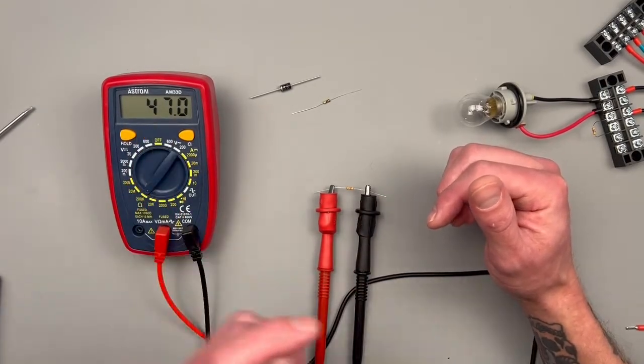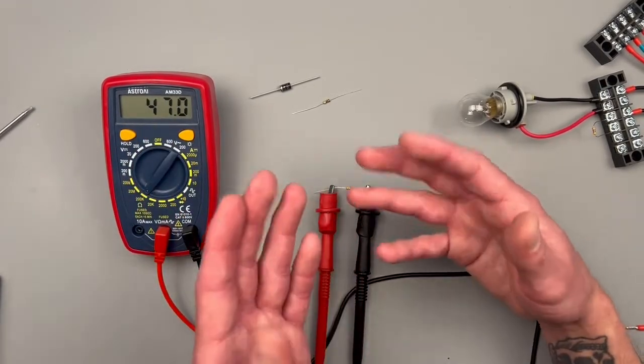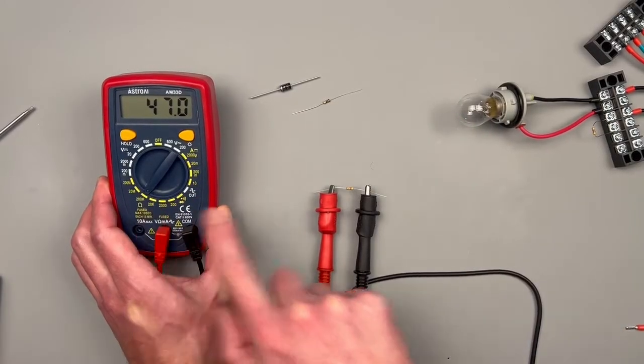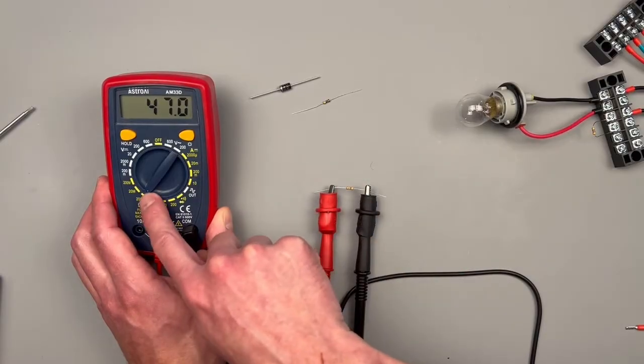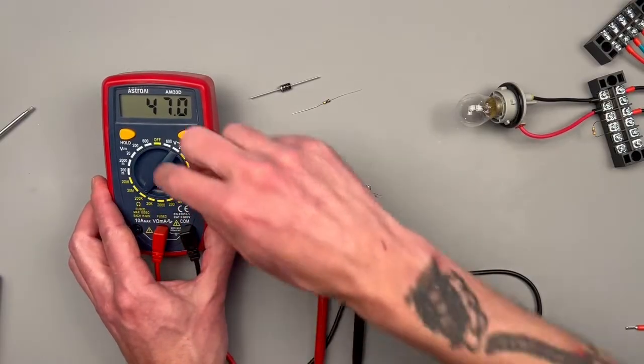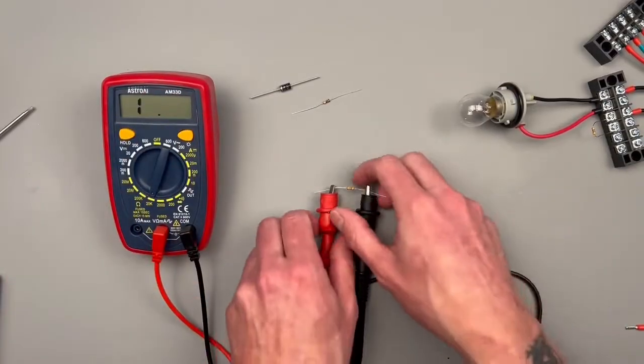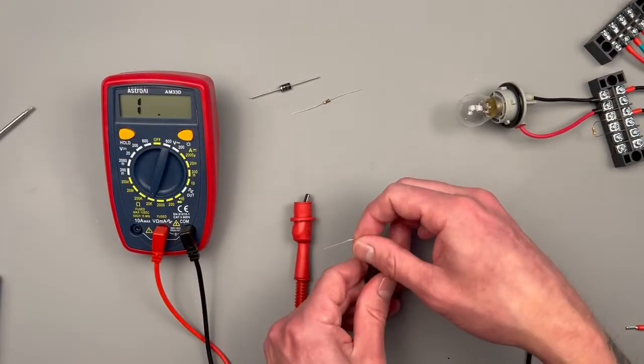Our next setting is at 20k, and because this is at 47, that's out of the window that this can read, so it should show a one indicating that it's out of range, and it does.